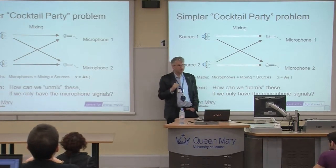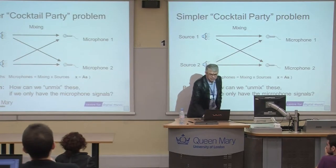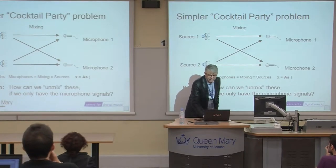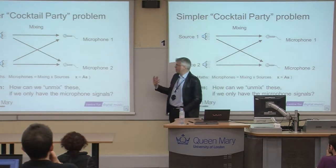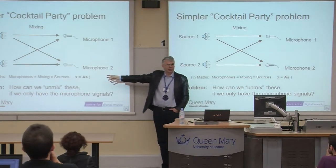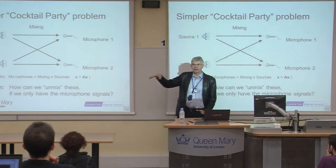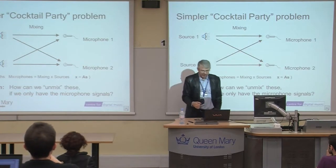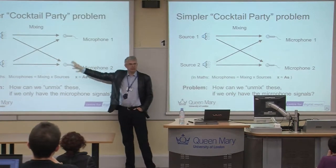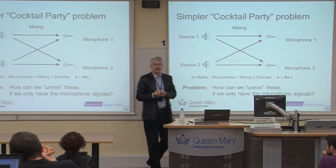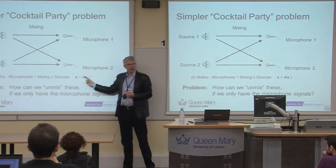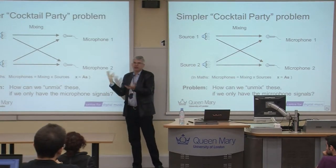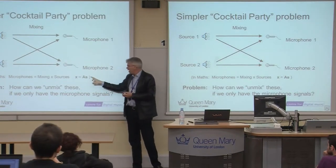The simplest version is where we've got two speakers and two microphones — your two ears. We might have two sources: one counting in English, one in Spanish, giving a mixture. This is not hard maths — we're just doing simple matrix multiplication to add pathways to these two. The key thing is that we want to unmix those sources when we only hear the mixture X and don't know what the mixing matrix A is. If we knew A, we could simply do a matrix inversion — problem solved. But we have to estimate A.